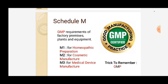Schedule M — similar to L for GLP, M is for GMP (Good Manufacturing Practices). Schedule M covers requirements of factory premises, plants, and equipment. Sub-schedules: M1 is GMP for homeopathic preparations; M2 is GMP for cosmetic manufacture; M3 is GMP for medical device manufacture.